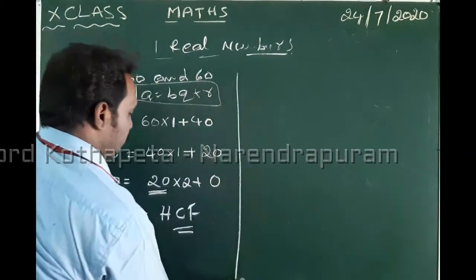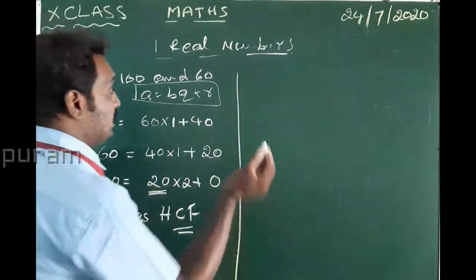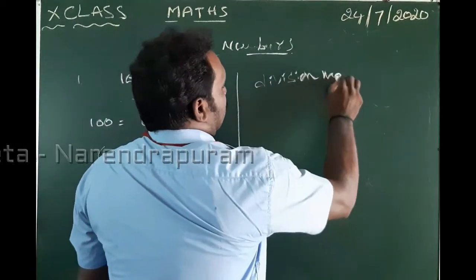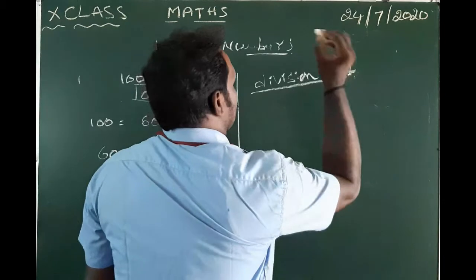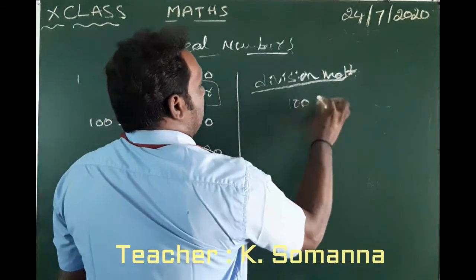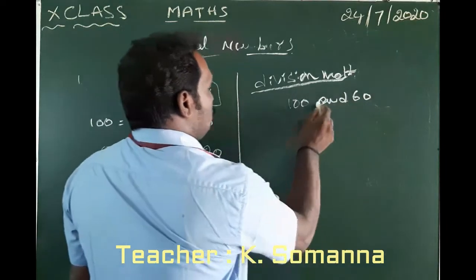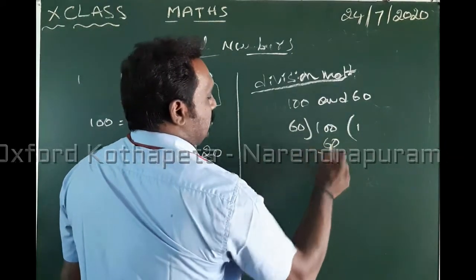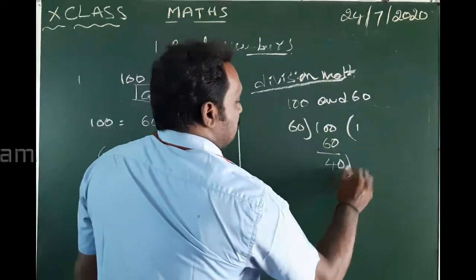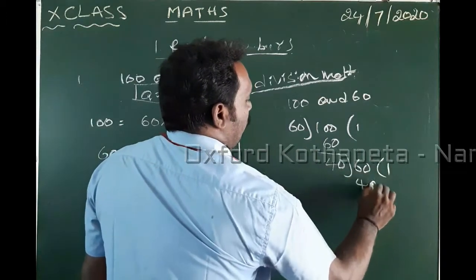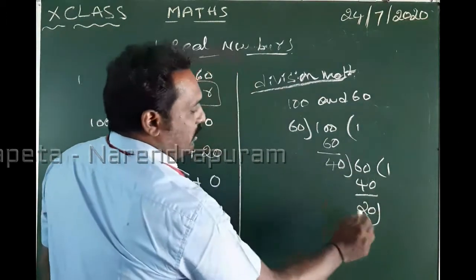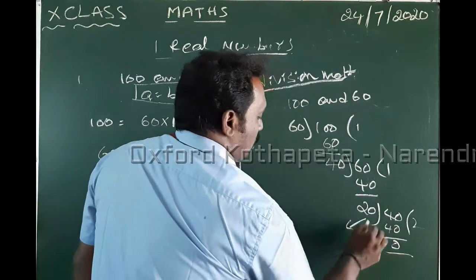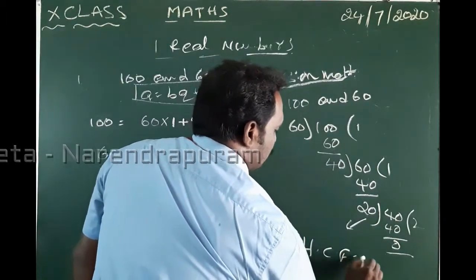Another example using the division method: HCF of 100 and 60. 100 ÷ 60 = one time, remainder 40. Then 60 ÷ 40 = one time, remainder 20. Then 40 ÷ 20 = two times, remainder 0. So, HCF is equal to 20.